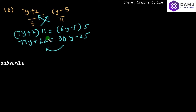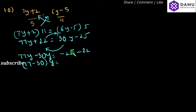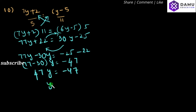Shift variables left side and constants to the right side. So, 77y minus 30y will be equal to minus 25 minus 22. So, 77 minus 30: taking 77 minus 30, we need to do subtraction. That is 47y, and on the right side minus 25 minus 22 will be minus 47. Y will be equal to minus 47 by 47. Simplifying, y will be equal to minus 1.